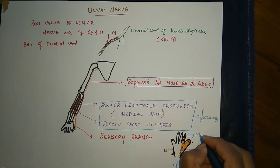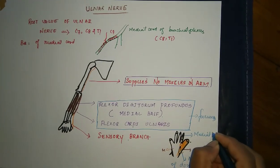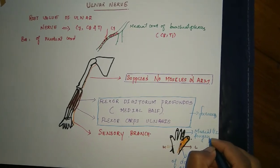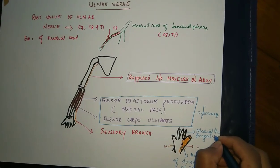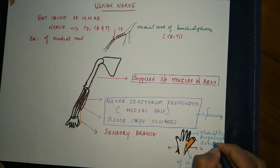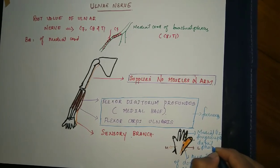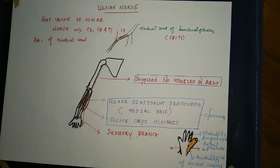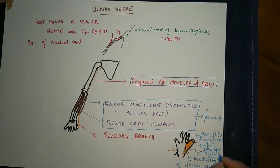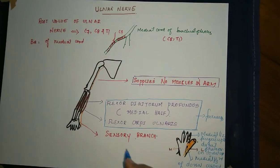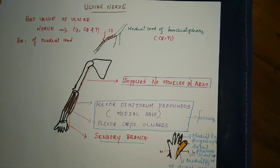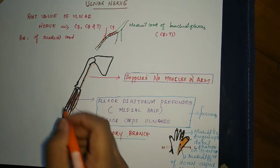The sensory branch also supplies the medial one and a half fingers up to the distal phalanx on the dorsal aspect.